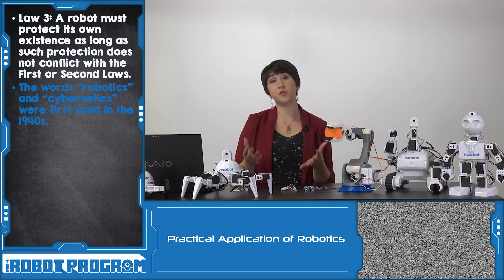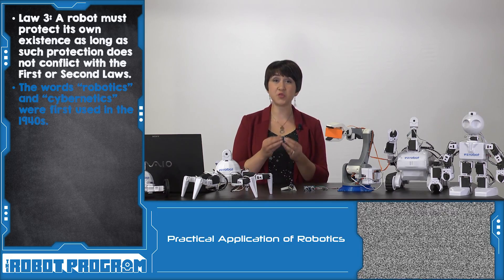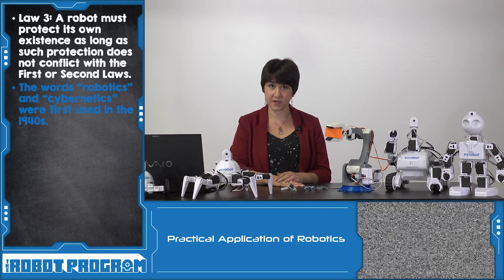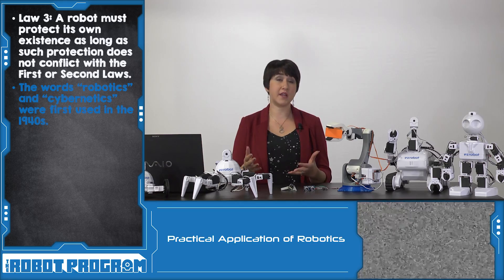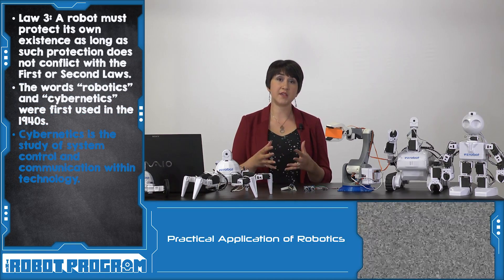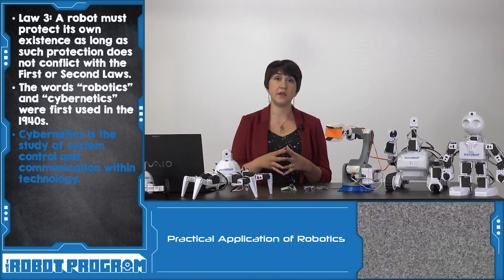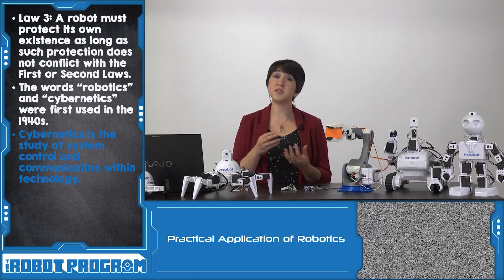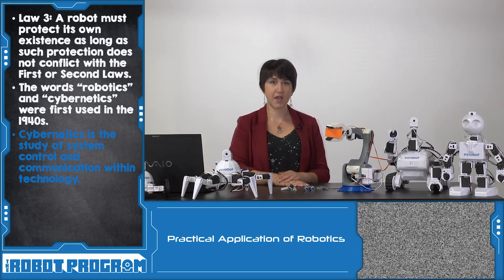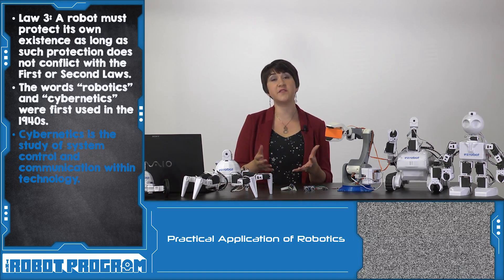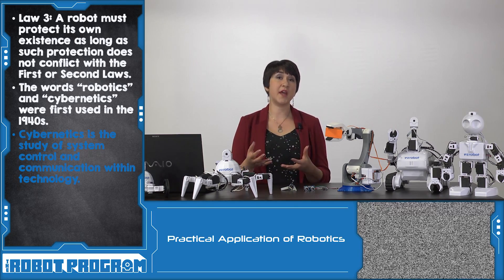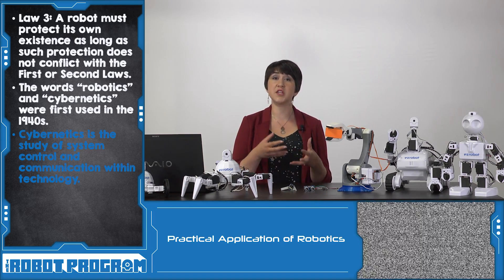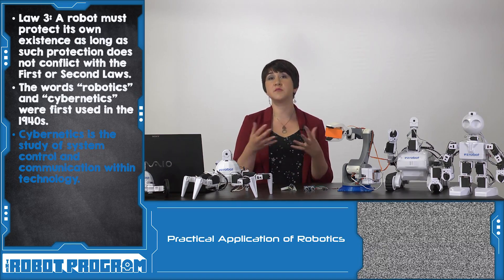The three laws of robotics was one of the first times that the actual word 'robotics' was used. Also in the 1940s, the concept of cybernetics was introduced. Cybernetics is the process of defining anything that controls technology, and it forms the basis for modern robotics. It allows us a way to examine the communication and systems control within a machine.